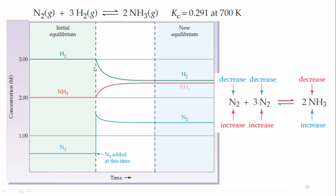This is shown in the graph. When nitrogen concentration is increased, the reaction proceeds forward over time. The concentration of N₂ decreases, the concentration of H₂ further decreases, and the concentration of ammonia increases. The system reaches a new equilibrium when the forward reaction rate equals the backward reaction rate.